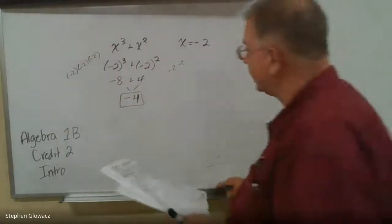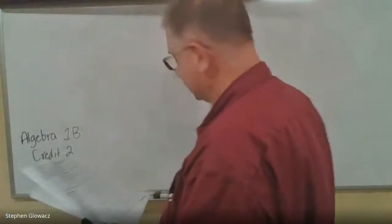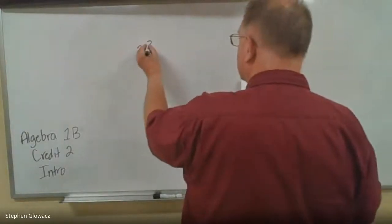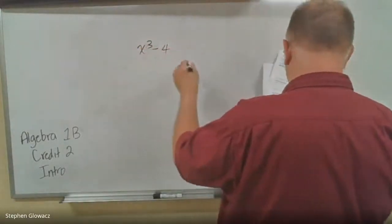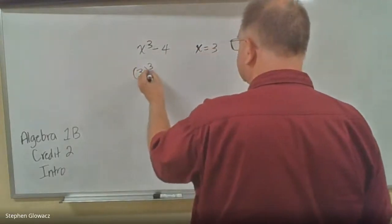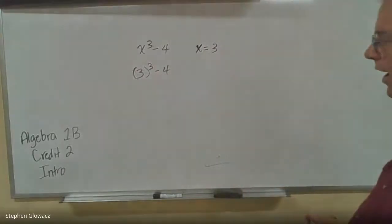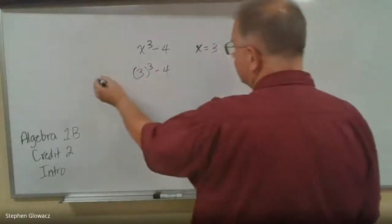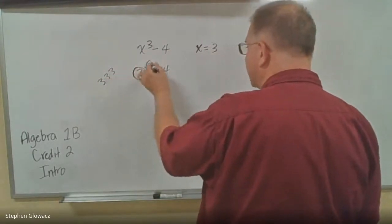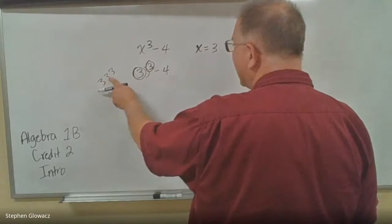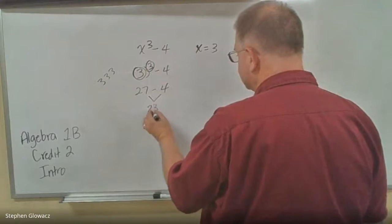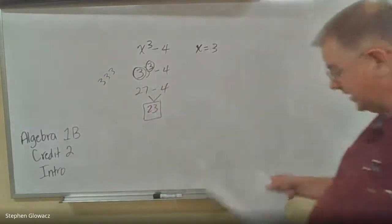Let's go to number 9. We have X to the third minus 4. There's only one variable to plug in for. We're told that X is equal to 3, so we're just going to plug 3 in for X. 3 to the third power, remember, it doesn't mean 3 times 3, it means 3 times 3 times 3. This is the number you're multiplying, this is how many you're multiplying. So 3 times 3 is 9, 9 times 3 is 27. 27 minus 4 is 23. So that is number 9.